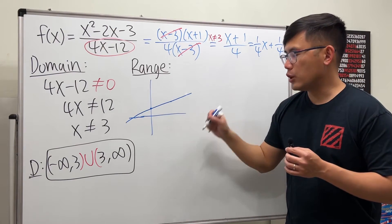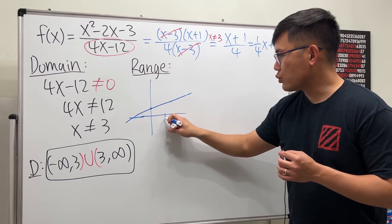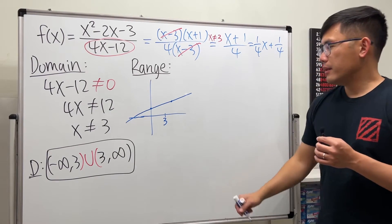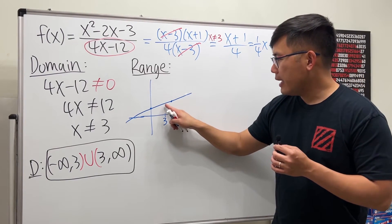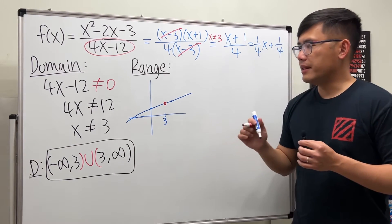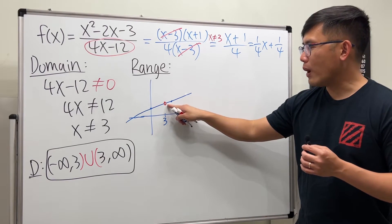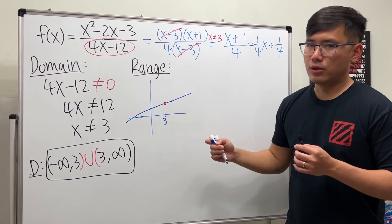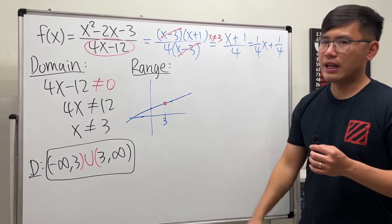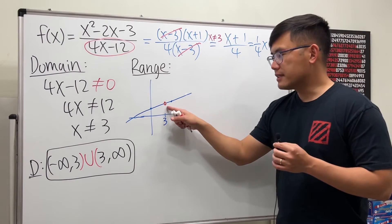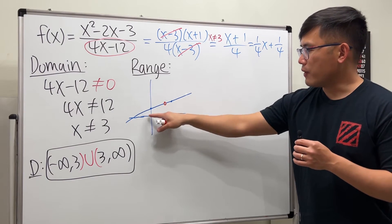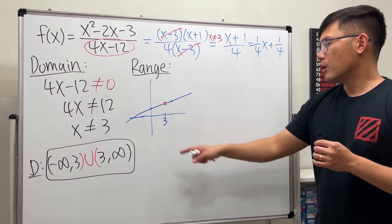Now here's the key: x cannot equal 3, so we have to account for that on the graph. At x equals 3 we place an open circle. We need to find the y-value of that open circle, because that's the y-value that's missing from the range. To find it, we use the concept of the limit — studying the behavior of the function around 3.